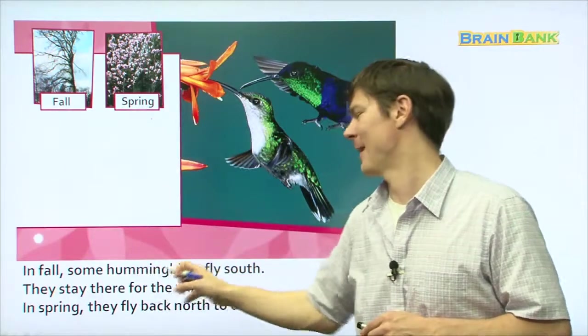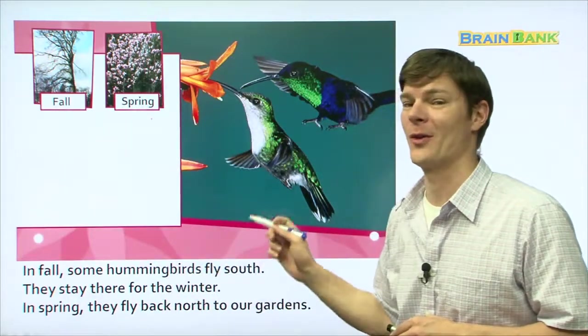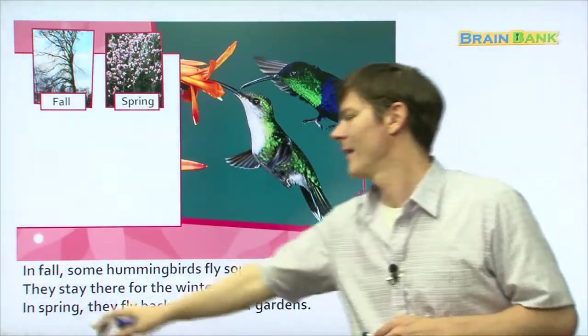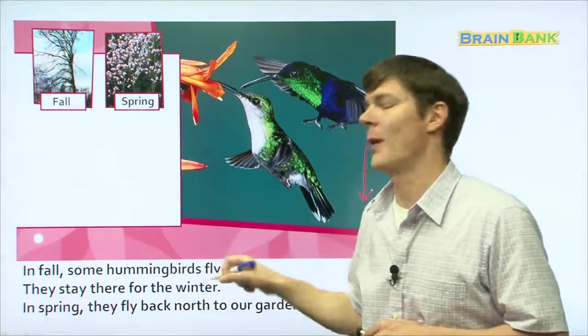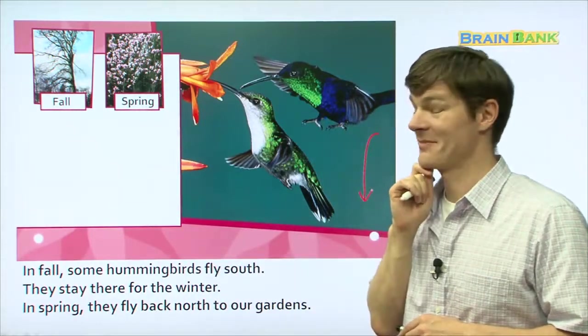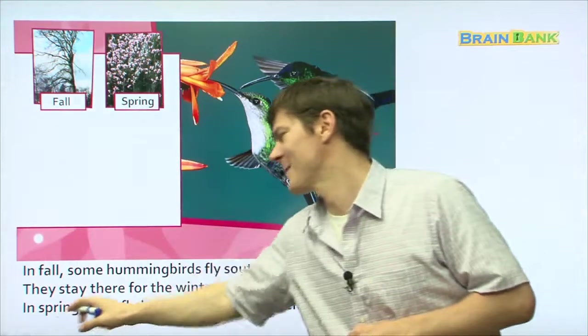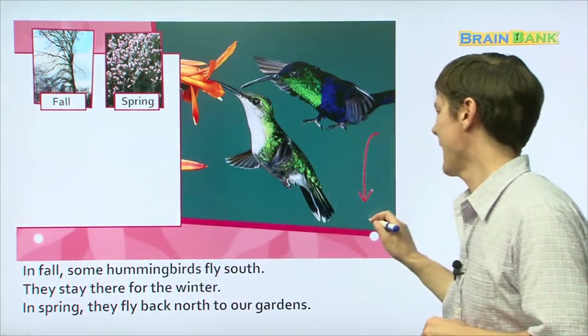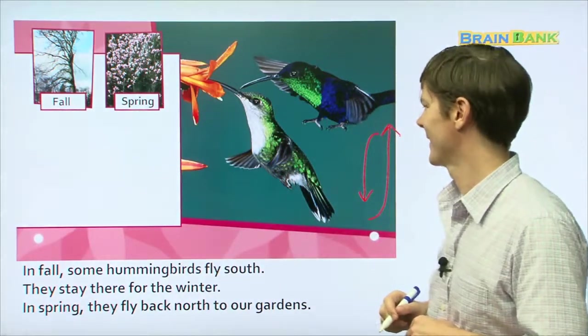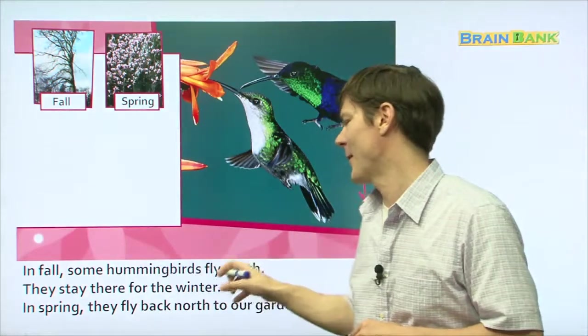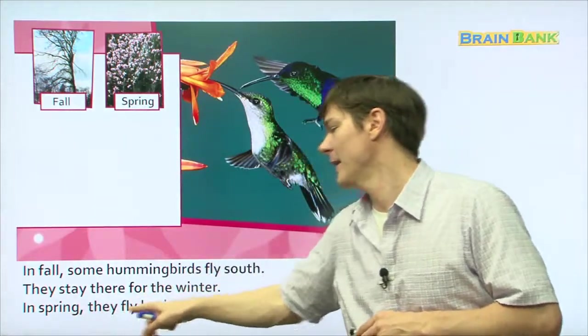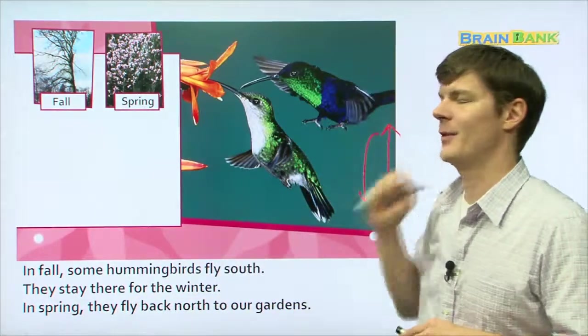In fall, some hummingbirds fly south. In the fall, they fly south. They stay there for the winter. Why do you think they stay there for the winter? Because it's warm, maybe? In spring, they fly back north to our gardens. That's great! So, in the fall, some hummingbirds fly south. They stay there for the winter. And then in the spring, they fly back north to our gardens.